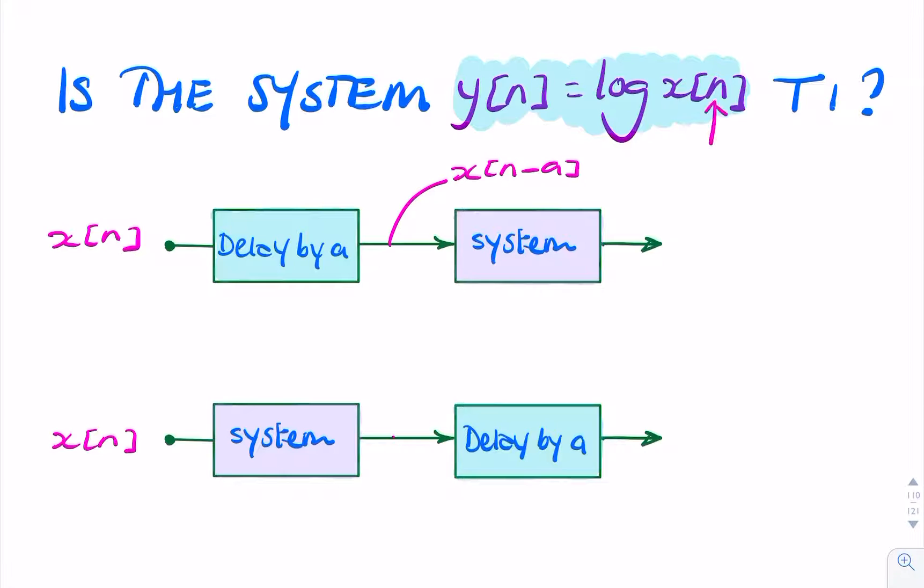So we simply replace n with n minus a. So that's what we do for this first pathway. So the output would simply be... Oh, sorry. The output would be log x of n minus a.